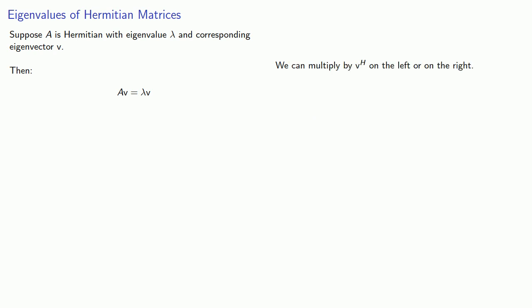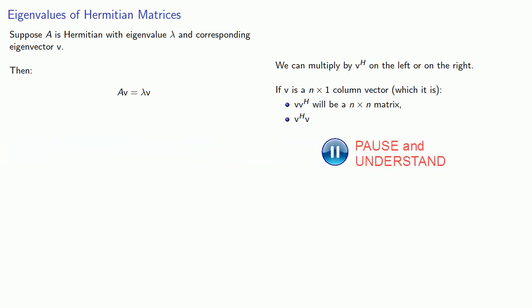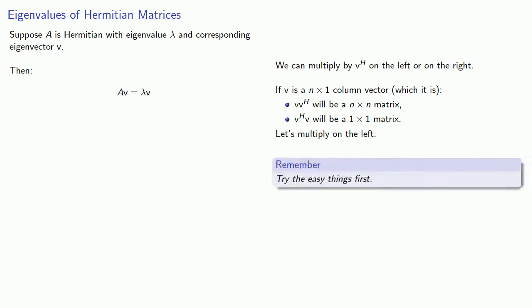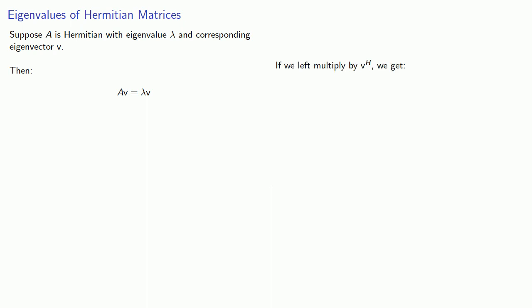We have some choices: we can multiply by the Hermitian on the left or on the right. If V is an n-by-1 column vector, multiplying on the right by V Hermitian gives an n-by-n matrix. But multiplying on the left by V Hermitian gives a 1-by-1 matrix. Let's multiply on the left, because let's try the easy things first.